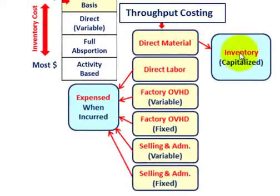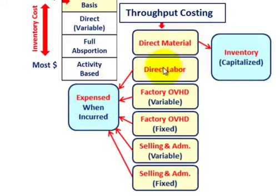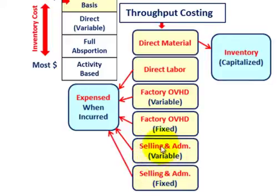With throughput costing, we concentrate on what gets capitalized in inventory versus what is expensed for the period. Only direct materials are included in inventory. Everything else — direct labor, factory overhead (both variable and fixed), and all selling and administrative expenses including support functions like engineering and research and development — those are all expensed. The only thing that gets included in inventory is the direct material.